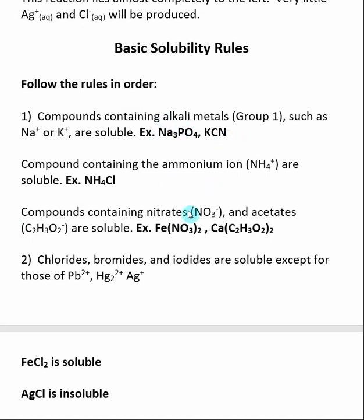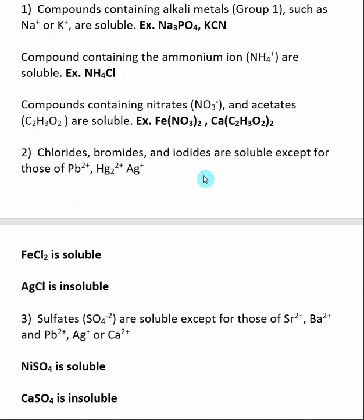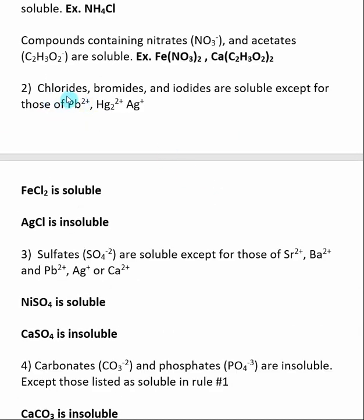To summarize Rule 1: Group 1 metals, ammonium, and nitrates are soluble — remembering these will get you through most of the solubility you need for general chemistry. If you have an ionic compound and cannot determine solubility from Rule 1, move on to Rule 2. Rule 2 says chlorides, bromides, and iodides are soluble, except for those with Pb²⁺, Hg²⁺, and Ag⁺. For example, iron(II) chloride is soluble, but AgCl is insoluble — chloride, bromide, and iodide salts of Ag⁺ tend to be insoluble.